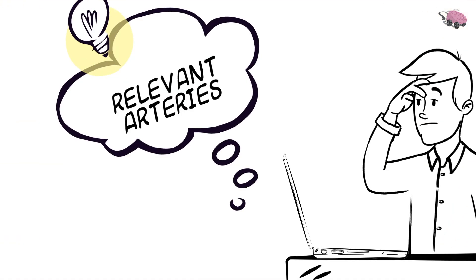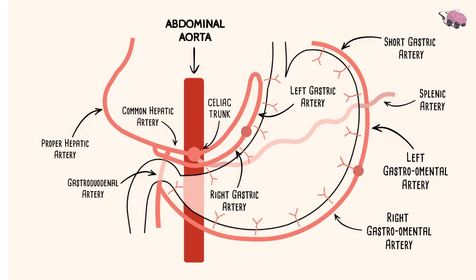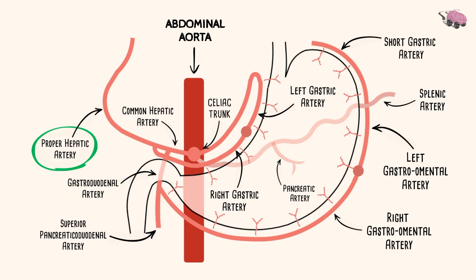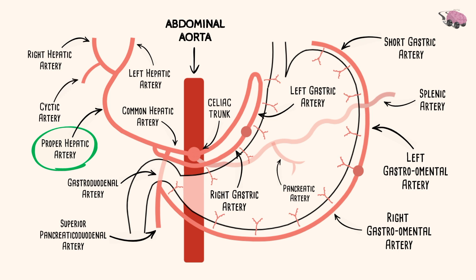Now we have some relevant arteries to label. The splenic artery going towards the spleen gives off an artery supplying the pancreas — the pancreatic artery. From the gastroduodenal artery, we have the superior pancreaticoduodenal artery. The proper hepatic artery divides into the left and right hepatic arteries, supplying the left and right lobes of the liver. The right hepatic artery gives off a branch called the cystic artery, which goes to the gallbladder.